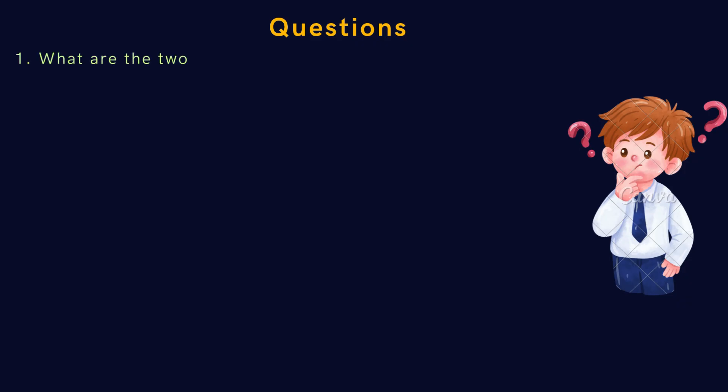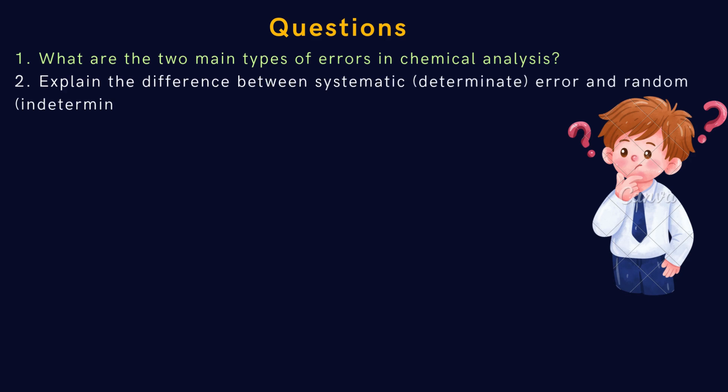Let us see what questions can be raised on this topic we learned. First, what are the two main types of errors in chemical analysis? Second, explain the difference between systematic determinate error and random indeterminate error. Third, what are additive and proportional errors?